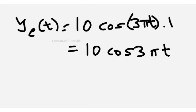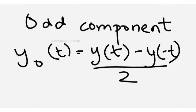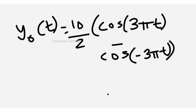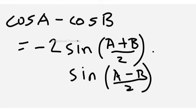Next we find the odd component. The formula for the odd component is [y(t) - y(-t)] / 2. To get the time-reversed signal we substitute -t for t. We also use the trigonometric identity: cos(a) - cos(b) = -2sin((a+b)/2) · sin((a-b)/2). You can also write it as sin((a+b)/2) · sin((b-a)/2), removing the minus outside.